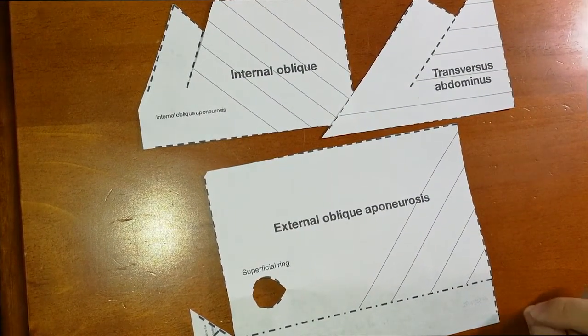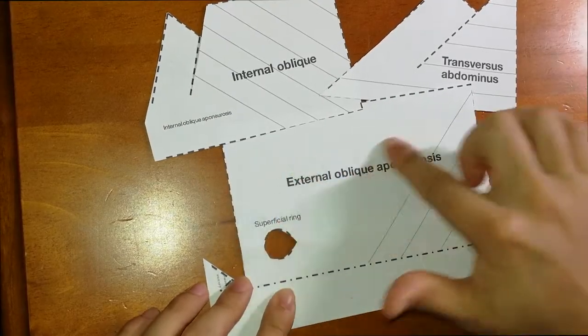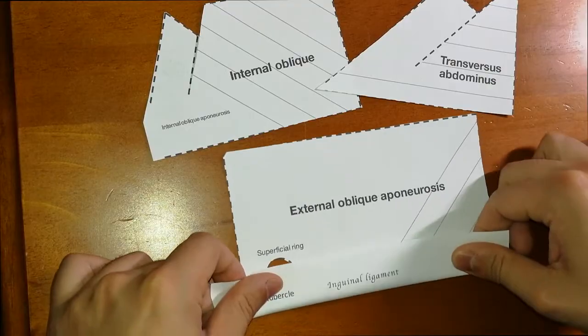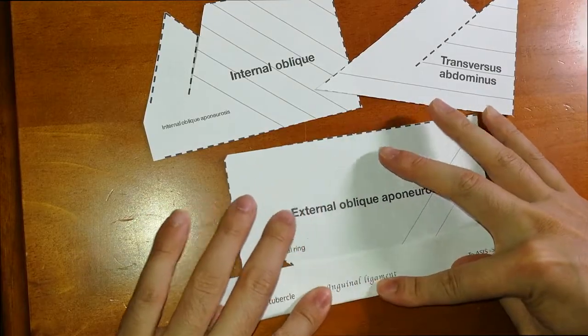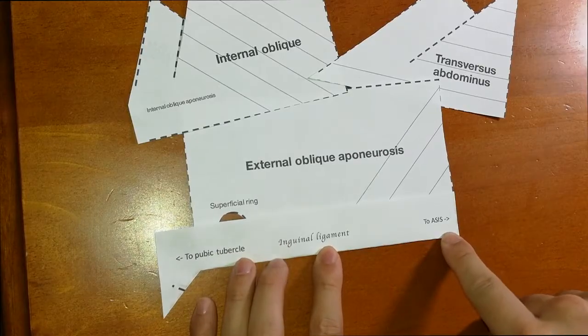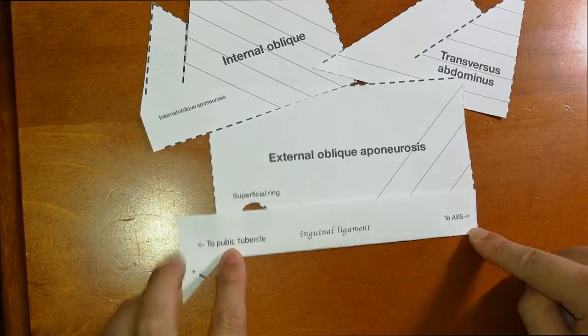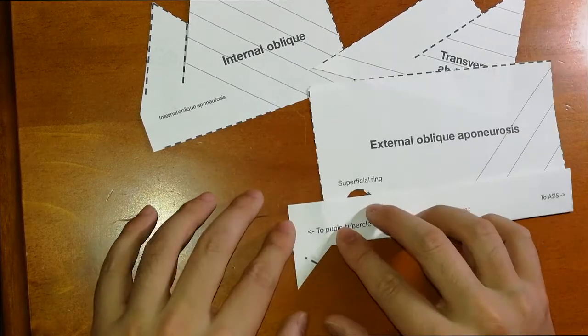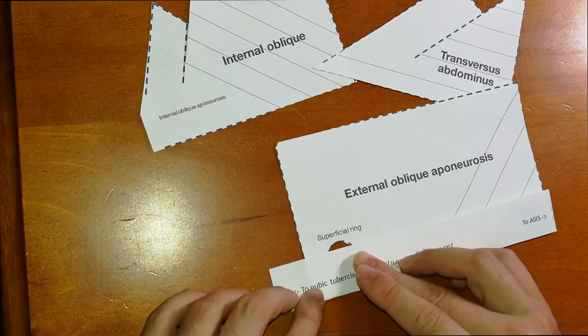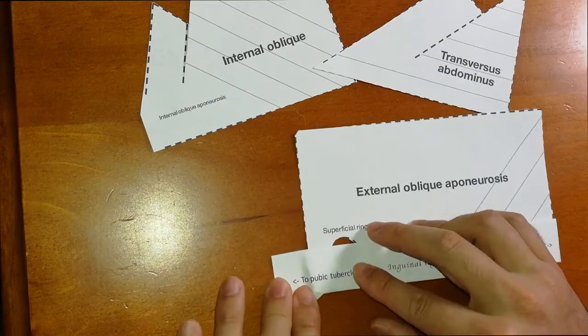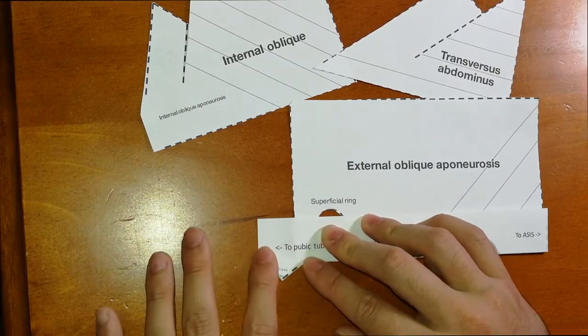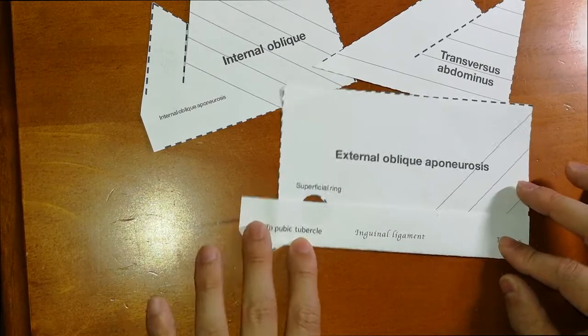Here's the external oblique aponeurosis, and I'm going to begin by folding up the inguinal ligament. The inguinal ligament runs between the anterior superior iliac spine to the pubic tubercle. I'm going to fold this back to reflect the ligament, which is the lacuna ligament here, and as you can see, it covers the medial portion here.